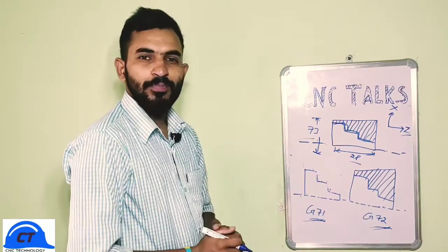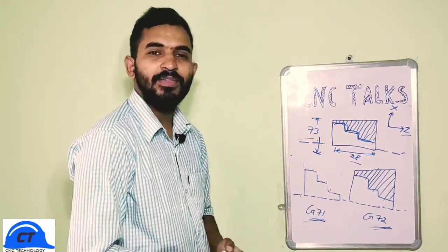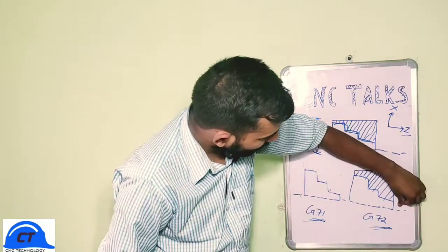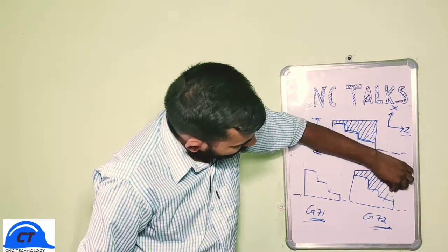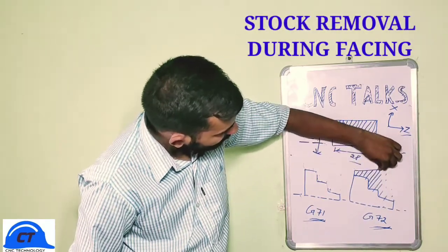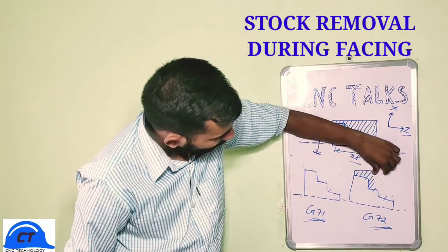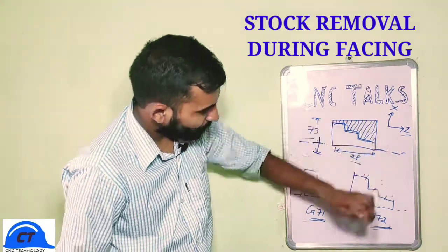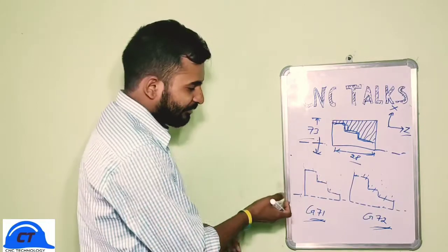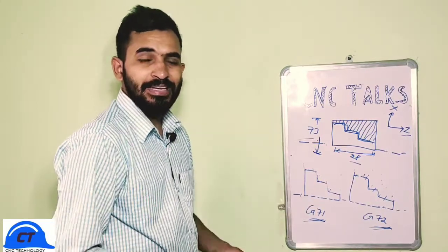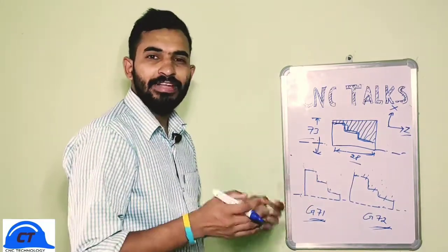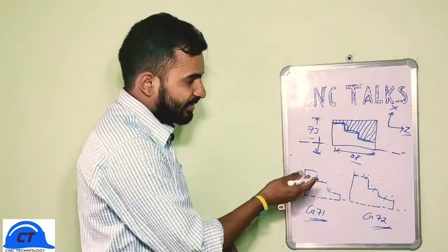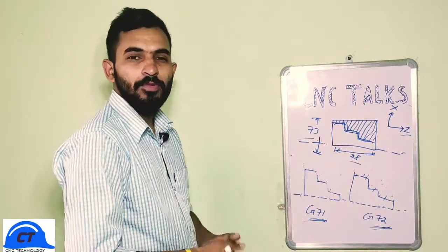If we use G72, our tool will remove the excess amount of material during facing, moving in this way — which is called stock removal during facing. So using G71 and G72 we can easily obtain the required part, but the difference is that in G71 our tool moves in the Z direction, while in G72 our tool moves in the X direction.